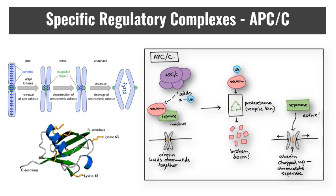Ubiquitin tagging is incredibly common in the cell. When ubiquitin is added to a protein, it serves as a marker for destruction — it was named ubiquitin precisely because it is ubiquitous to the cell.